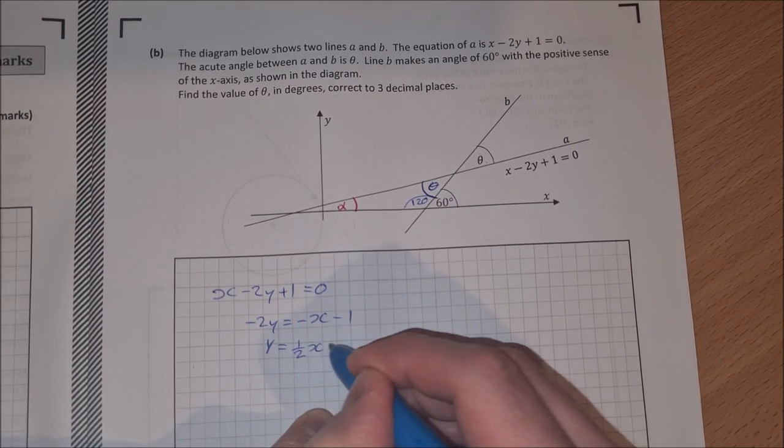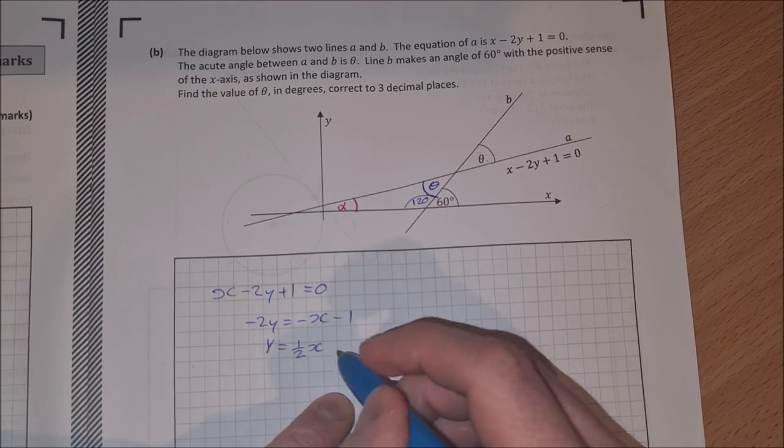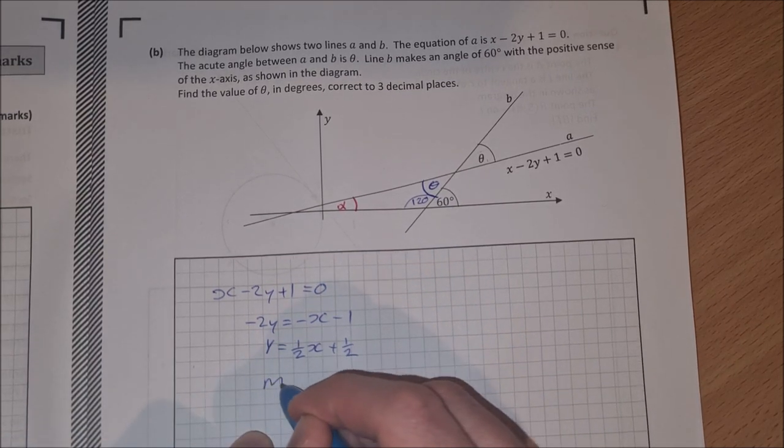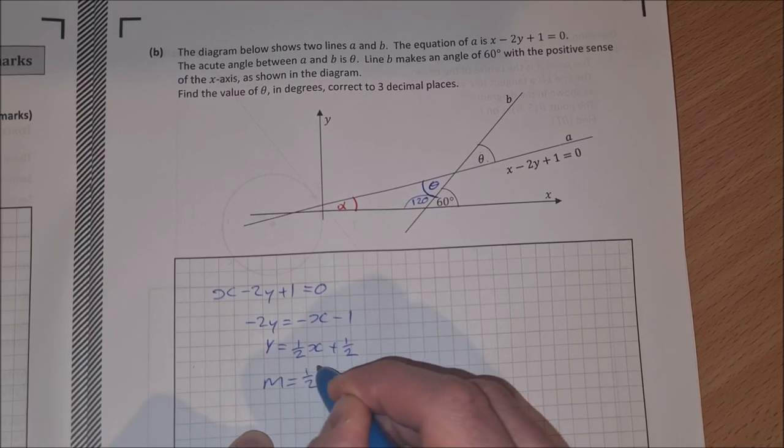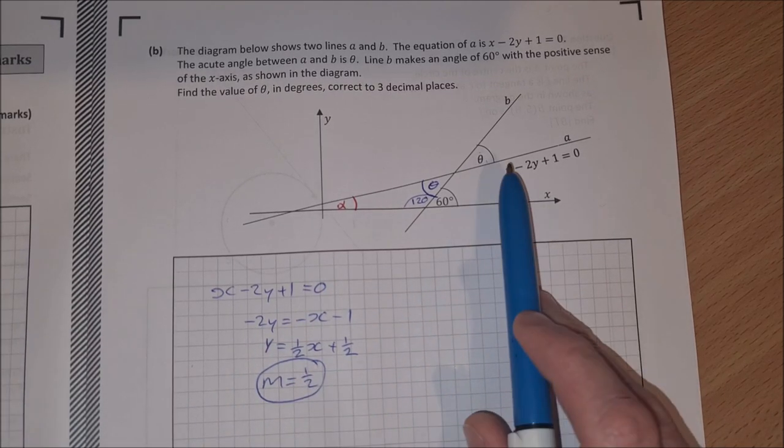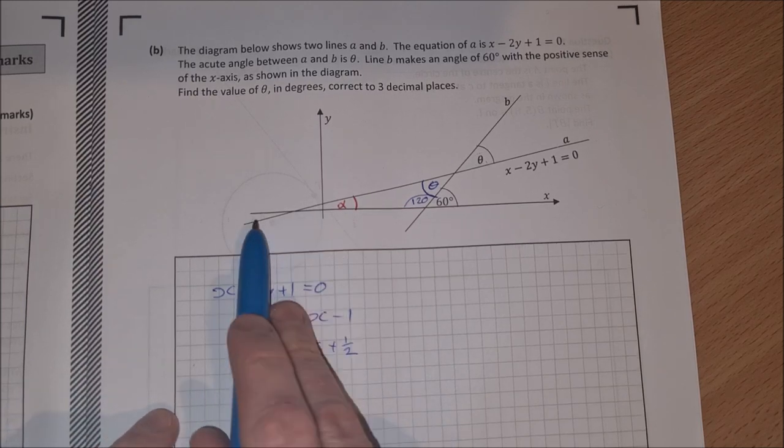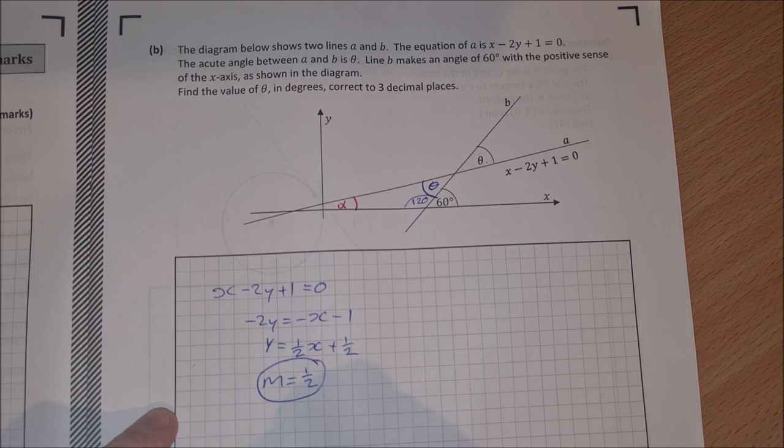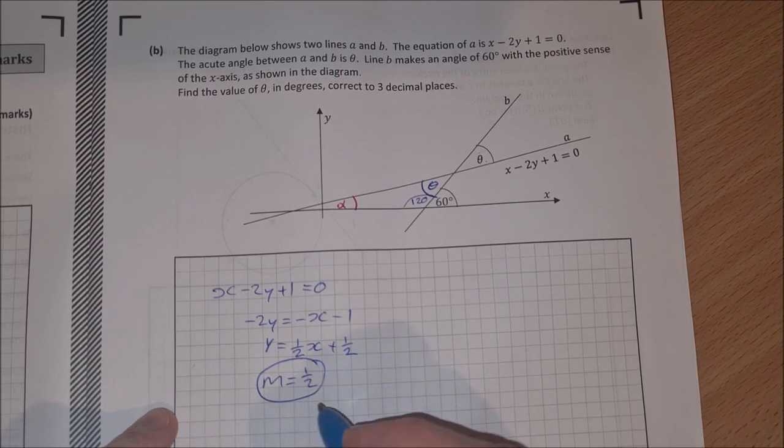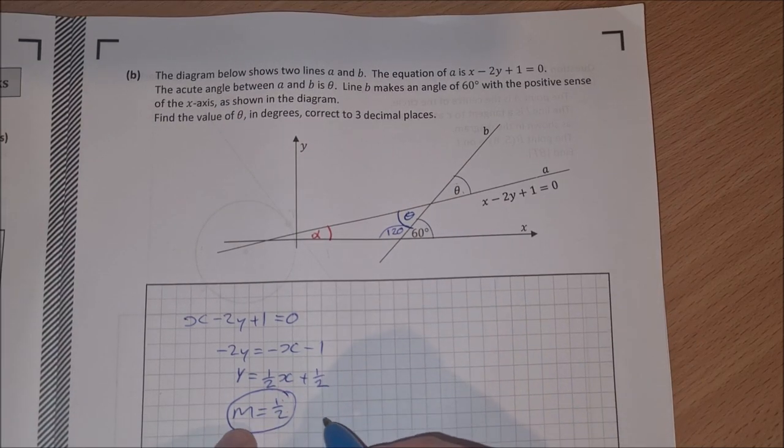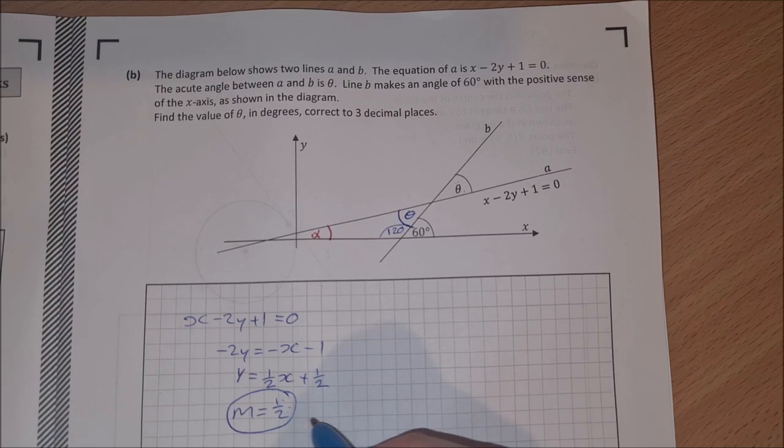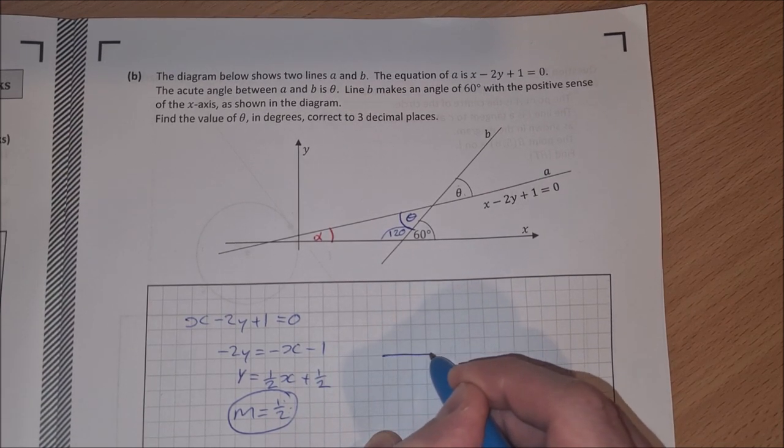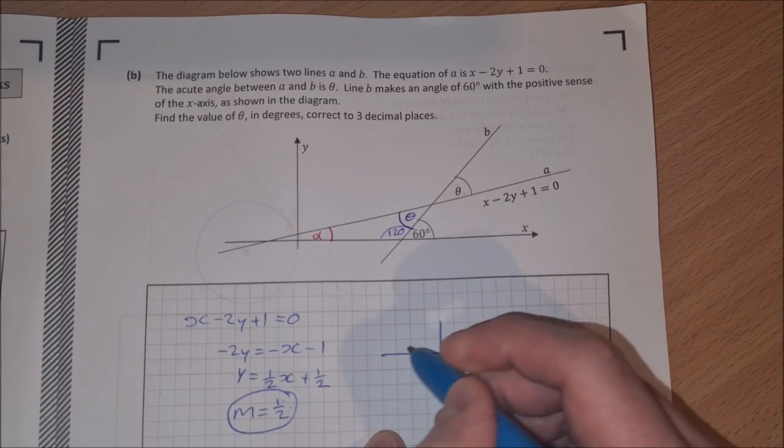Divide across by 2 to get y is equal to -x divided by -2 is a half x, and then -1 divided by -2 is a half. So that means that m is equal to a half. The slope of this line here is half. Now, because it's making an angle with the x-axis here, I can draw a little triangle. So let's draw this. If this has a slope of a half, that means I could draw a triangle where the rise is 1 and the run is 2, like this here.